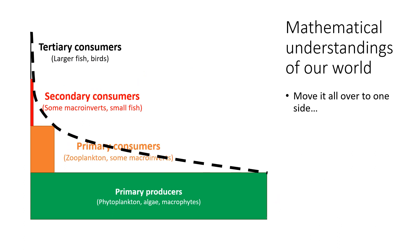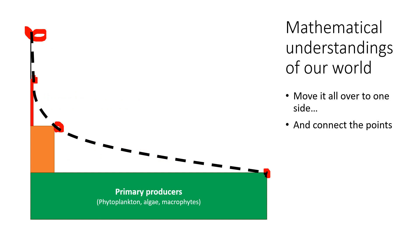If we push all those rectangles to the side, you can draw a line connecting the edges, showing some exponential decline in the number of consumers as you move up trophic levels — which makes intuitive sense and now you can see it mathematically. There will be very small numbers of top consumers relative to their biomass, because you simply don't have enough primary producers to support them. Connect the points, and you get a nice curve.